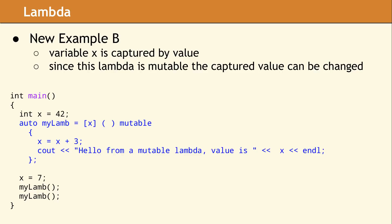The first time we call my lamb, the value is increased, so the message will display a value of 45. This new value is saved inside the lambda, so the second time we call it, the value would be incremented to 48. It's worth noting that if x had been captured by reference, the printed value for x would be 10 the first time and 13 the second time.